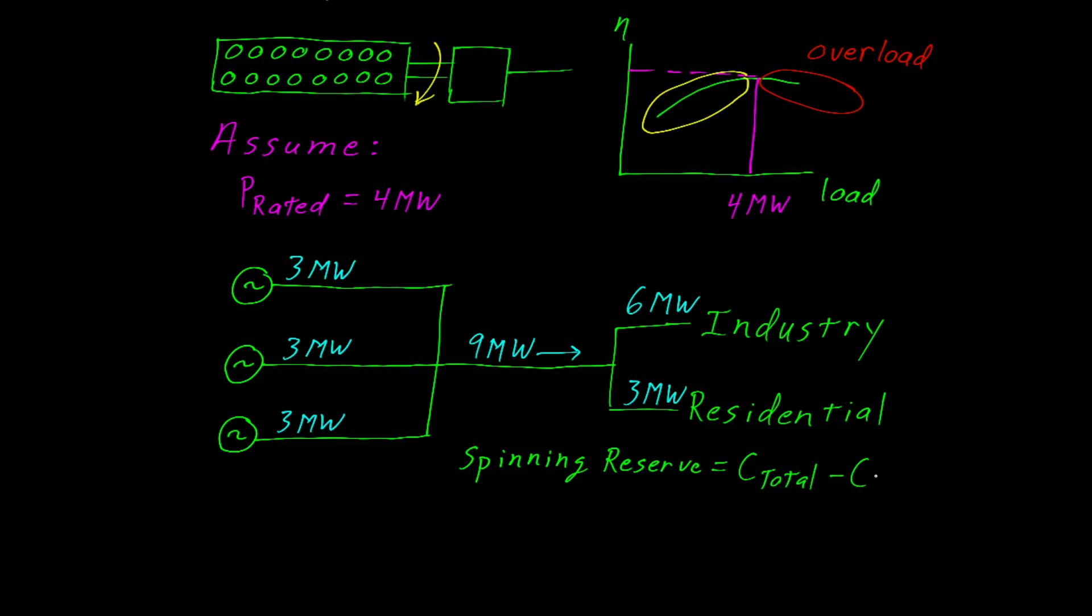And in this particular case, our total capacity is the three generators. Now each generator is rated at 4 megawatts, so together we have a total capacity of 12 megawatts. And of course the town is only using 9 megawatts. And you do the subtraction, you'll see that our spinning reserve is 3 megawatts. Again you could think of this as the unused capacity of the system.